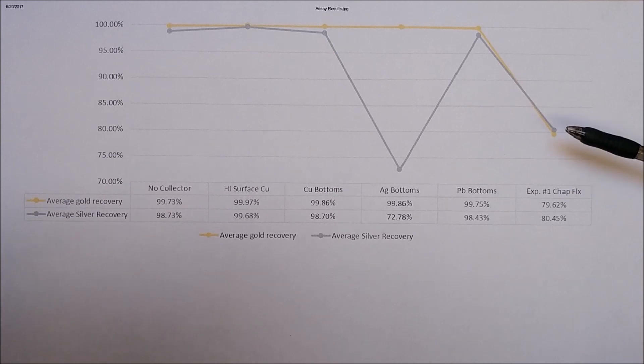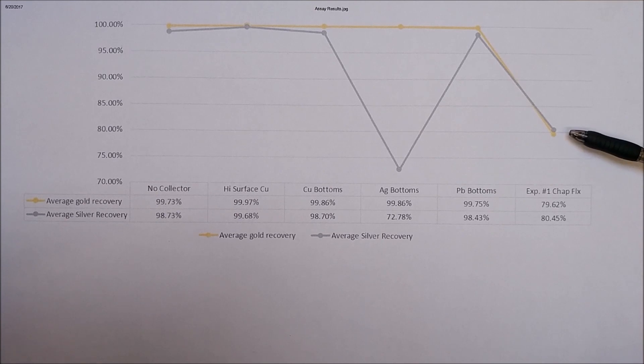And then this is the results from the Chapman flux, the one that I did kind of after the fact, just to see if we could oxidize away all of the metal and be left with a precious metal button. And as you can see, it didn't work very well. We only recovered about 80% of both the gold and silver. So this one proves that we do need a collector metal.